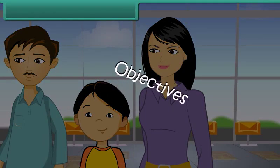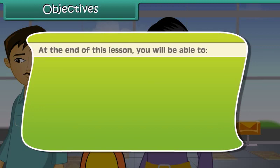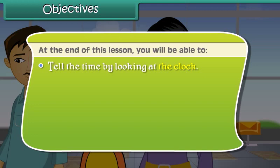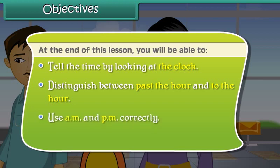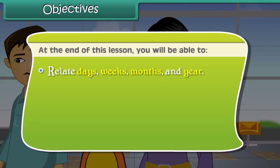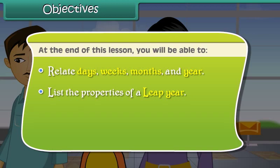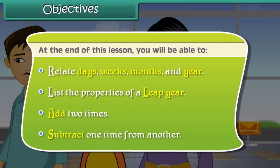Objectives. At the end of this lesson, you will be able to: tell time by looking at the clock; distinguish between past the hour and to the hour; use a.m. and p.m. correctly; use the 24-hour clock; relate days, weeks, months and year; list the properties of a leap year; add two times; and subtract one time from another.